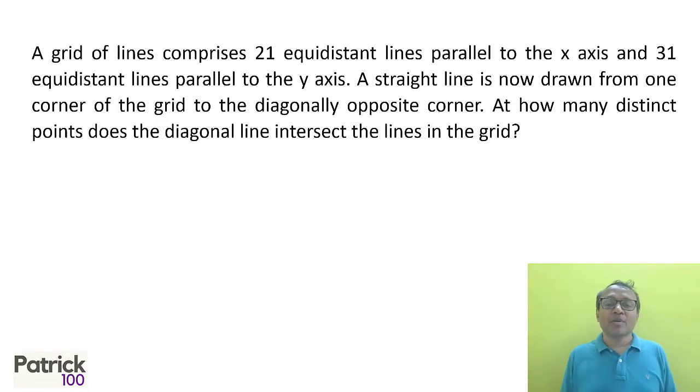First question: whenever you have big numbers like 21 and 31, always take a smaller aspect and then work on it. For example, if you look at 21 lines - that's 1 and then 20 more lines - and 1 and 30 more lines. Or let's say x-axis 20 lines and y-axis 30 lines.